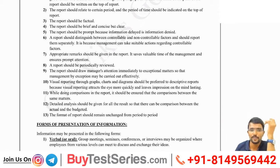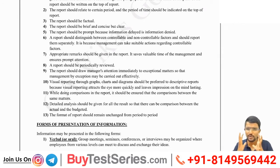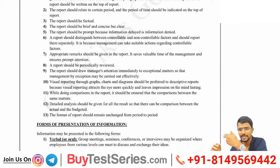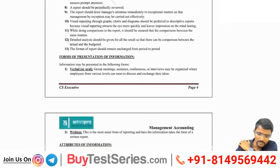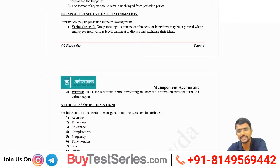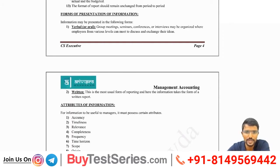The format of the report should remain unchanged from period to period. If a user has reviewed the report in detail last year, they will look directly for the areas they are most interested in next year. If the report format is consistent, they will know exactly where to find that information. Information can be presented in two forms: verbal, which is oral communication usually followed in meetings, or written document form. Most reporting is done in the form of written documents.